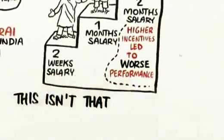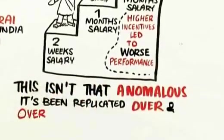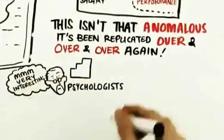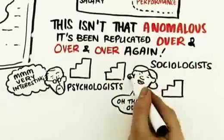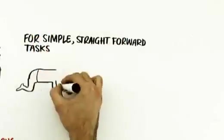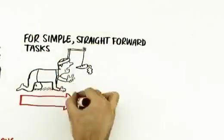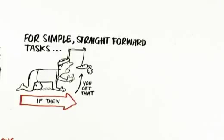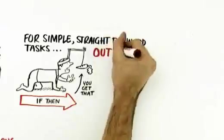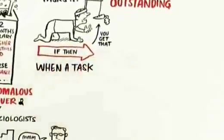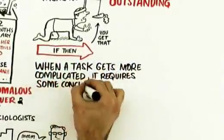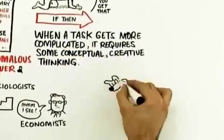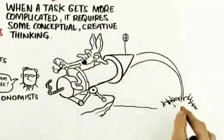What's interesting about this is that it actually isn't all that anomalous. This has been replicated over and over and over again by psychologists, by some extent by sociologists, and by economists. Over and over and over again. For simple, straightforward tasks, those kinds of incentives, if you do this, then you get that, they're great. For tasks that are algorithmic set of rules where you have to just follow along and get a right answer. If-then rewards, carrots and sticks, outstanding. But when the task gets more complicated, when it requires some conceptual creative thinking, those kinds of motivators demonstrably don't work.